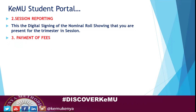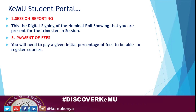Then you make payment of fees. Once you do session reporting, an invoice is raised — I'm going to show you how to check that invoice — and you're supposed to pay either full fees or the required percentage, which in normal situations is 60%. I encourage you to pay the full fees to avoid inconveniences. You're required to clear the balance when going to sit for exams. If the initial fees don't meet the required threshold, the system will not allow you to register units and you won't be able to attend classes, do exams, or submit assignments.